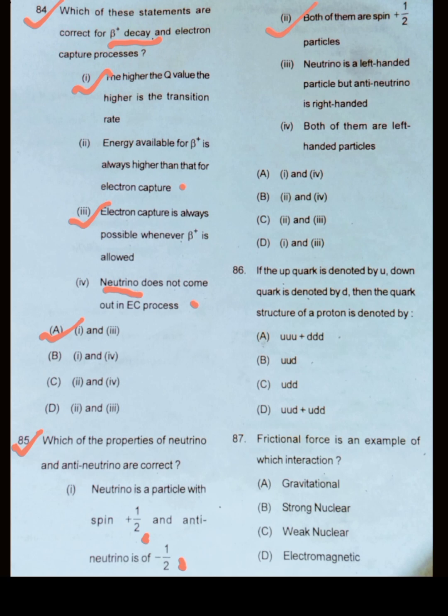Neutrino is left-handed particle but antineutrino is right-handed. The left-handedness or right-handedness is decided depending upon its helicity. So this is correct. Both of them are left-handed particles. No, this is incorrect.